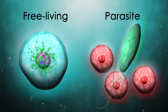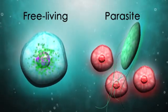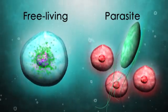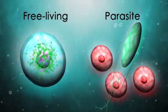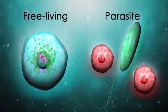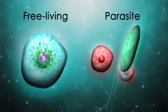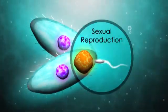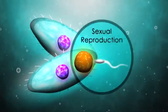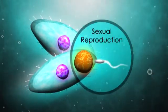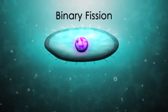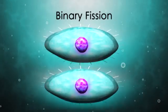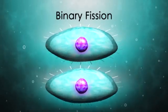Some protists are free living, and some are parasites. Some make their own food, and some get nutrition by hunting food or by simply absorbing it from their environment. Protists can reproduce via sperm and egg, or by binary fission, splitting into two genetically identical cells.